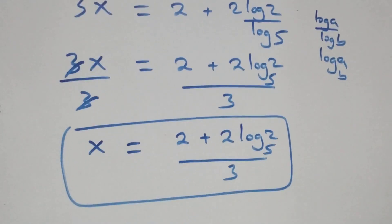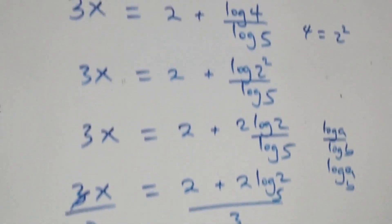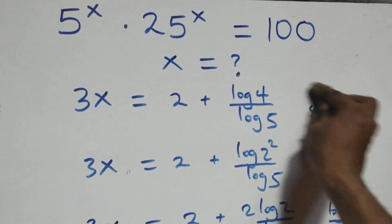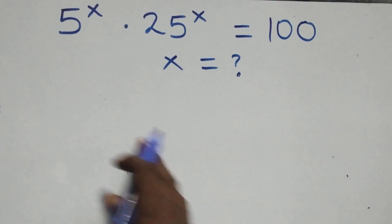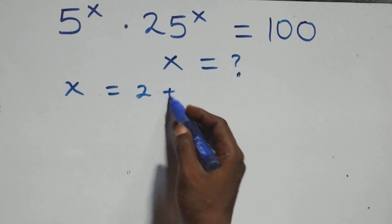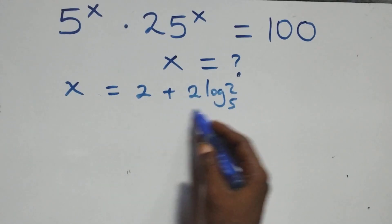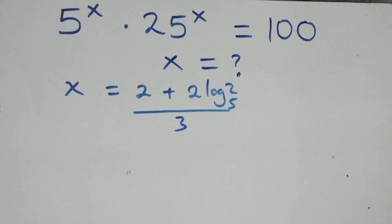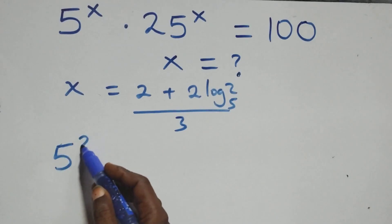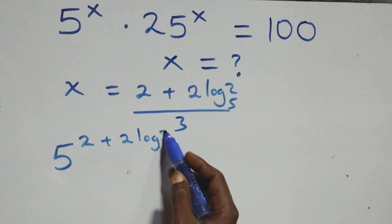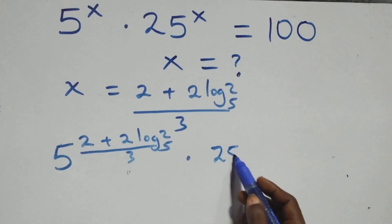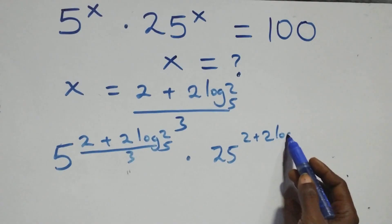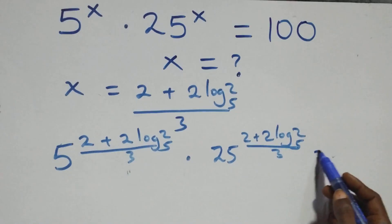That is the value of x here: x equals 2 plus 2 log 2 base 5, all over 3. Then let's check if this satisfies the given problem — we substitute the value of x. So we have 5 raised to power (2 plus 2 log 2 base 5, all over 3) times 25 raised to power (2 plus 2 log 2 base 5, all over 3) — is this equal to 100 on this side?